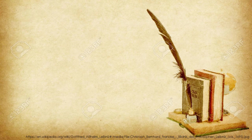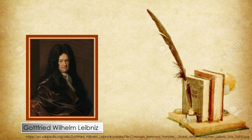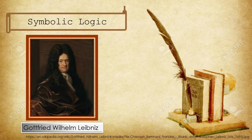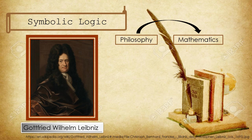Before anything else, let us have a brief introduction on the history of logic. There are several mathematicians who involved themselves in the study of logic. One of these is Gottfried Wilhelm Leibniz. He was known to be one of the first mathematicians to make a serious study on symbolic logic. He tried to advance the study of logic from a merely philosophical subject to a formal mathematical subject. Unfortunately, he never completely achieved this goal. However, several mathematicians also contributed to the advancement of symbolic logic as a mathematical discipline.